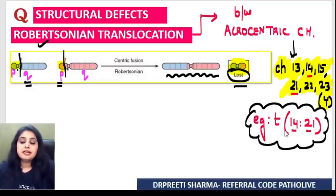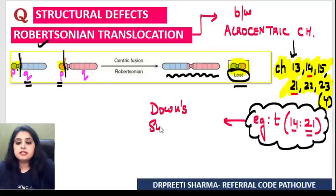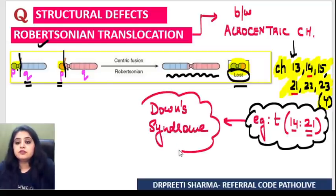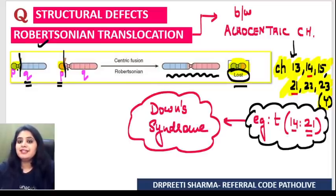Why did I take the example of 14 and 21? Because chromosome 21 is implicated here, this is very commonly implicated in Down's syndrome. So this is one of the methods by which Down's syndrome occurs.